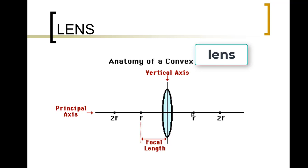If you have a convex lens with the object on one side and the image is found on the other side of the lens, that will produce a real image. But if the image is located on the same side as where the object is located, that is a virtual image.